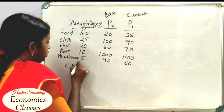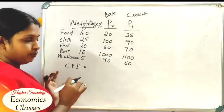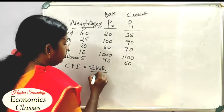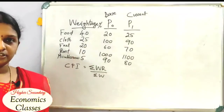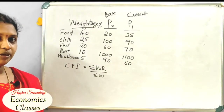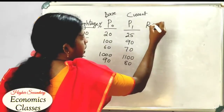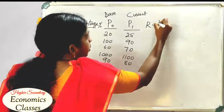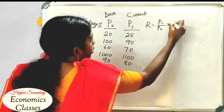What is the Consumer Price Index? In short form, CPI = ΣWR / ΣW, where W is the weightage. R is the price relative.